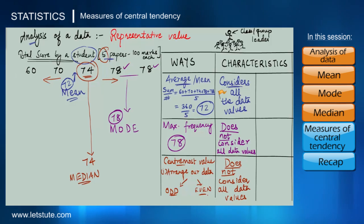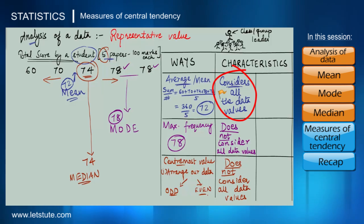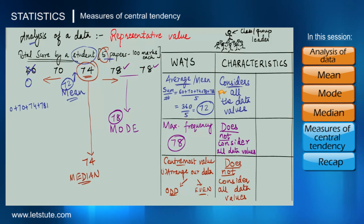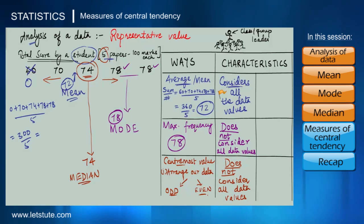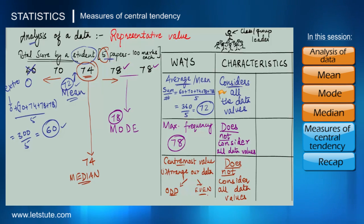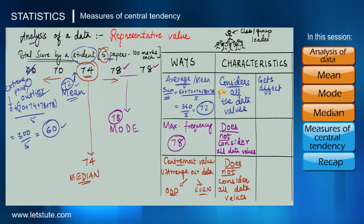Since mean considers all the data values, if we have a data value that is nowhere close to the others, the mean can change significantly. For example, if instead of 60 we had 0, the average would be 0 + 70 + 74 + 78 + 78 divided by 5, which is 300 divided by 5 = 60. The average changed from 72 to 60 just because one value changed. This extreme value is called an outlier, and we can say the mean gets affected by outliers.